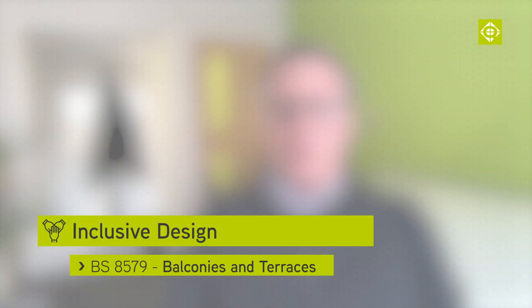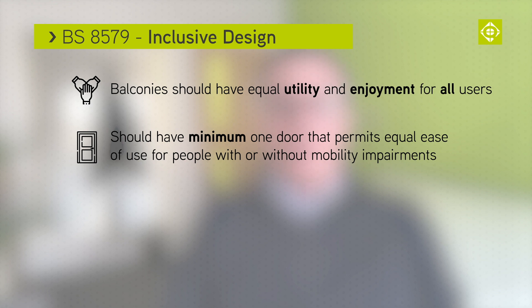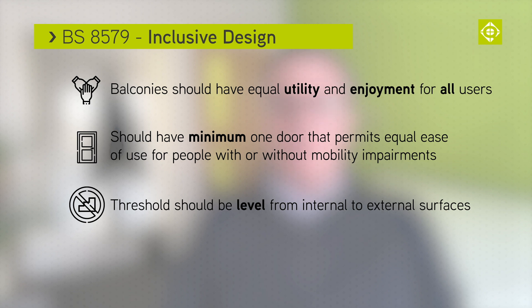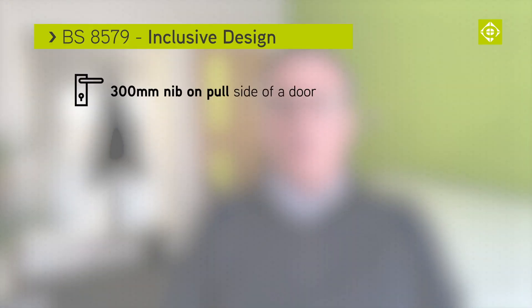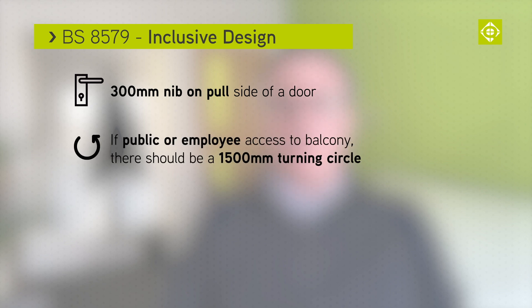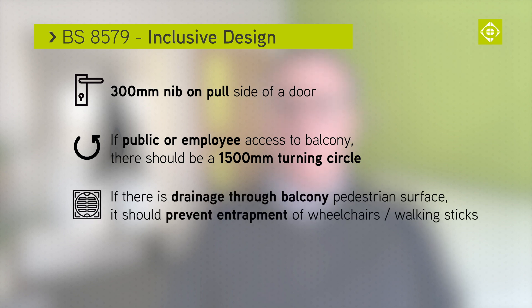Inclusive Design. Chapter 9 states that balconies should have equal utility and enjoyment for all users. A balcony should have at least one door that permits ease of use for people with or without mobility impairments. The threshold should be level from the internal to external surfaces, and weather bars and any other similar features should be minimal and limited to no more than a 15mm upstand. Balcony dimensions and design need to be considered, including having a 300mm nib on the pull side of a door, and wherever there is public or employee access to a balcony there should be a 1500mm turning circle. If there is drainage through the pedestrian surface it should prevent entrapment of wheelchair tyres or walking sticks.